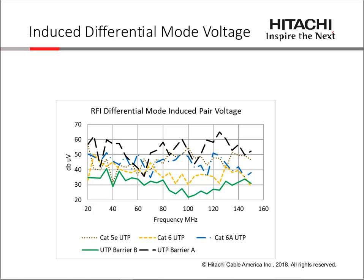We also measured the differential voltage using a balun on the pair rather than measuring conductor voltages directly. We saw an interesting variation: the three conventional UTP cables grouped together in the middle of the chart. Barrier A, because of its higher common-mode voltage, also had a higher differential-mode voltage, while barrier B exhibited much lower differential-mode voltage, as expected based upon its lower common-mode voltage coupling.